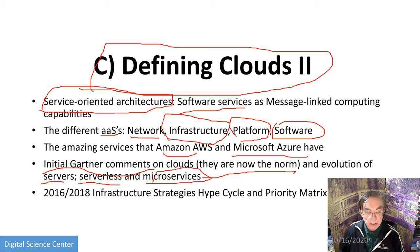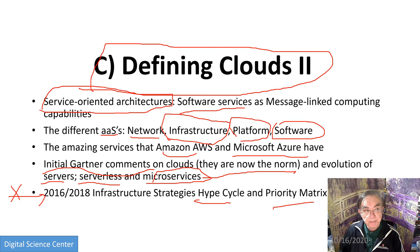Then we have a discussion of the infrastructure strategies: how you build a data center, what components go into it, with both the hype cycle and the priority matrix components.